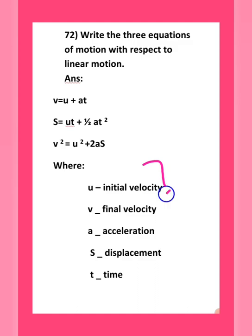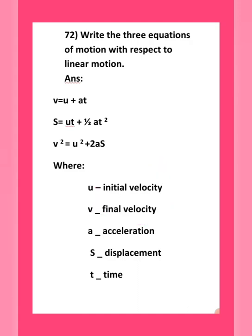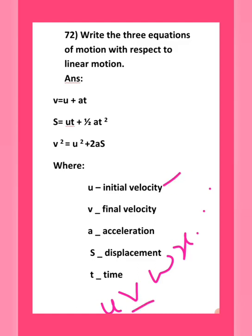A helpful trick to remember initial and final velocity: in the English alphabet, u comes before v. So u represents initial velocity and v represents final velocity — just remember them in alphabetical order.